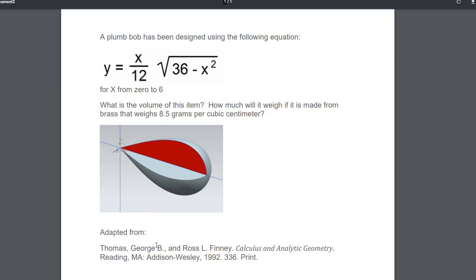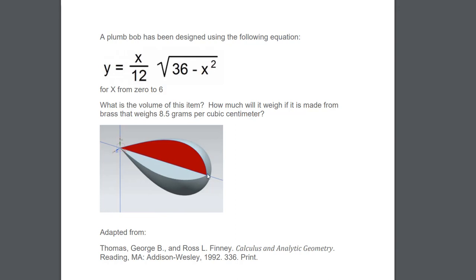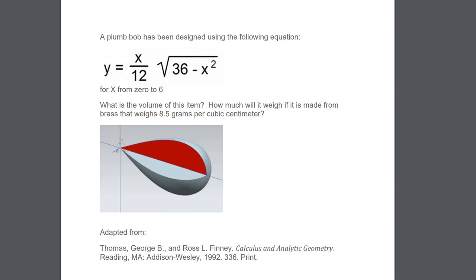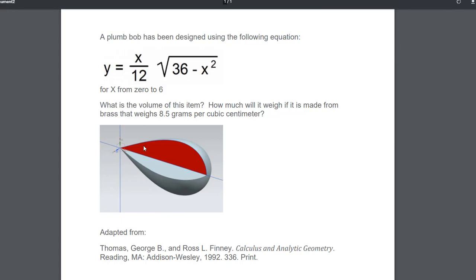The first assignment is to create a plumb bob where the curve is defined by a given equation. The xt goes from 0 to 6, so the span is 6 with no shift. Plug the equation into the expressions editor: yt = (xt / 12) * sqrt(expression involving xt), zt = 0, and t = 1. After creating the law curve, revolve it around the axis to create the solid plumb bob shape.